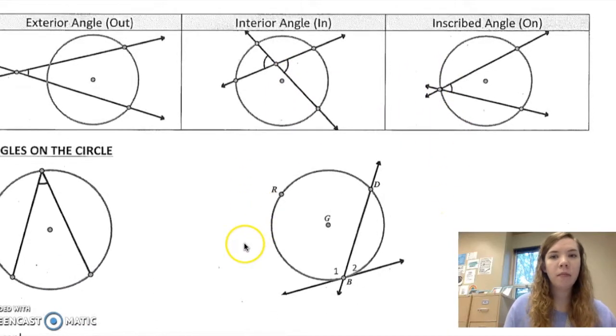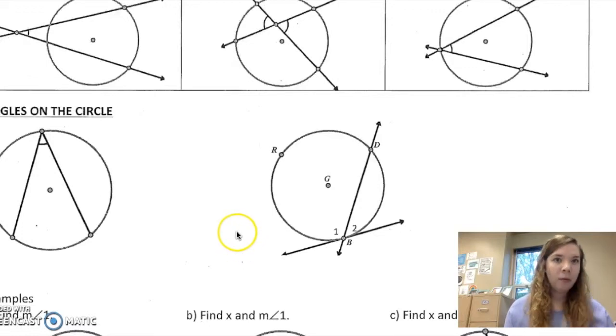Inscribed angles are the ones that we were working on earlier this week with problems that look like this. The angle is half of its intercepted arc. Or if this is x, this would be one half x.